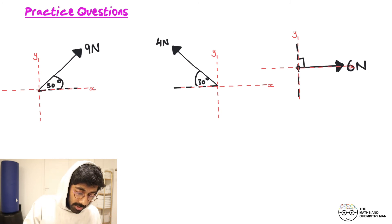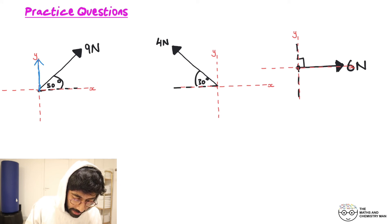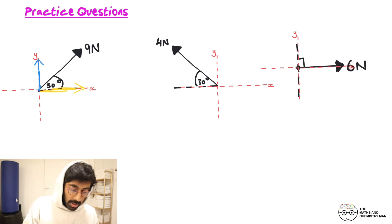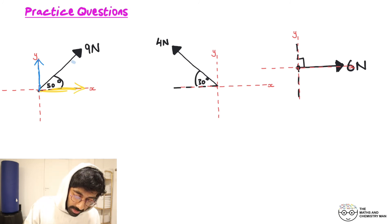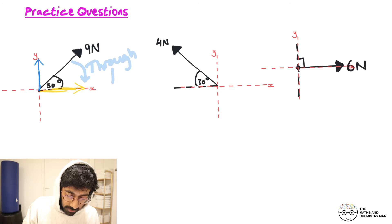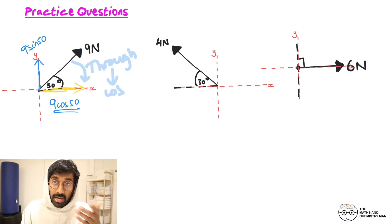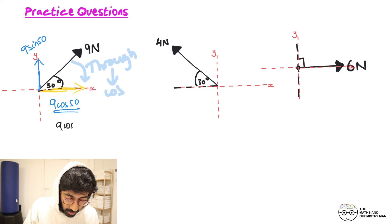Reviewing the first practice question: split the force into positive y and positive x directions — it's going in a northeasterly direction. The x component: drag 9 newtons through an angle of 50 degrees — through means cos — so 9 cos 50. The y component goes away from 50, so 9 sin 50. In i and j form: 9 cos 50 i + 9 sin 50 j.